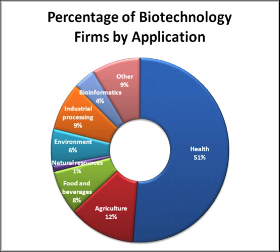Biochemistry is the study of chemical processes in living organisms. Biochemical processes govern all living organisms and living processes, and the field of biochemistry seeks to understand and manipulate these processes. Related areas of biochemical engineering include: Biocatalysis — chemical transformations using enzymes; Bioseparations — separation of biologically active molecules; Thermodynamics and kinetics — analysis of reactions involving cell growth and biochemicals; and Bioreactor design and analysis — design of reactors for performing biochemical transformations.